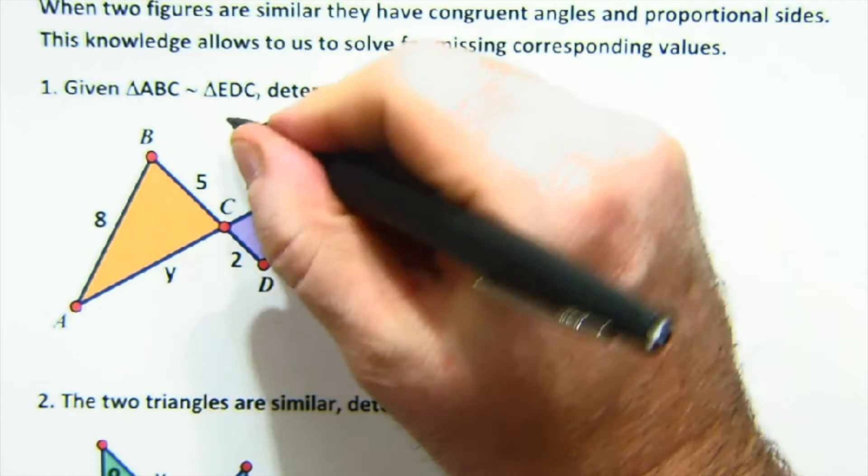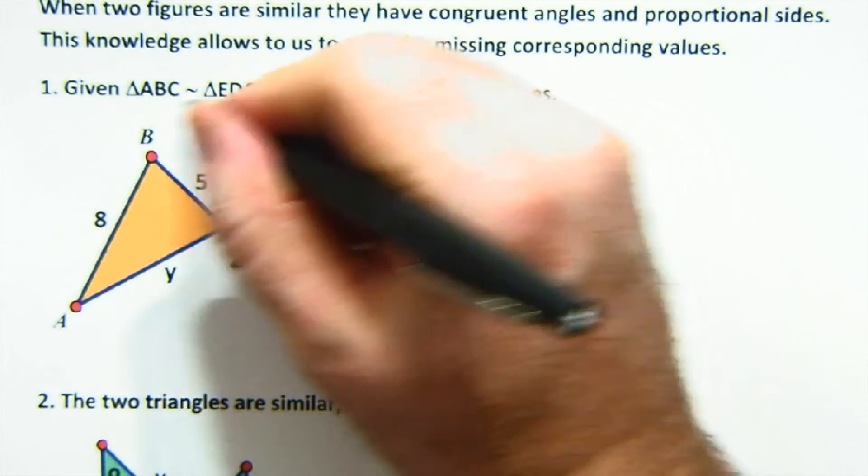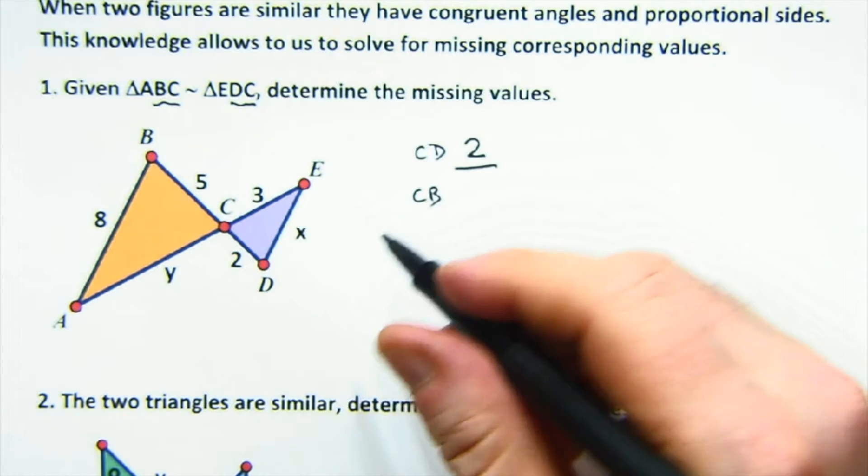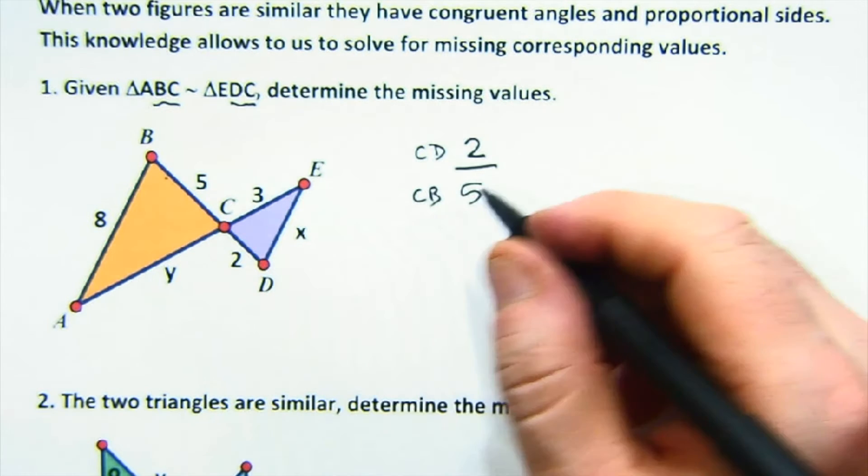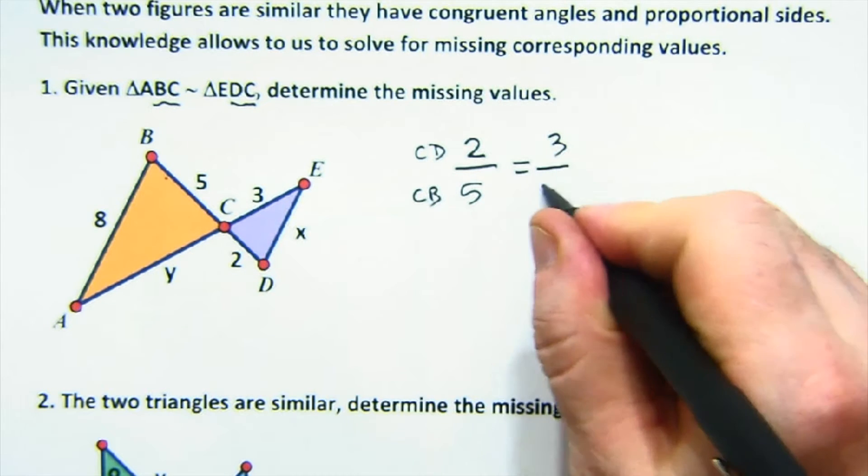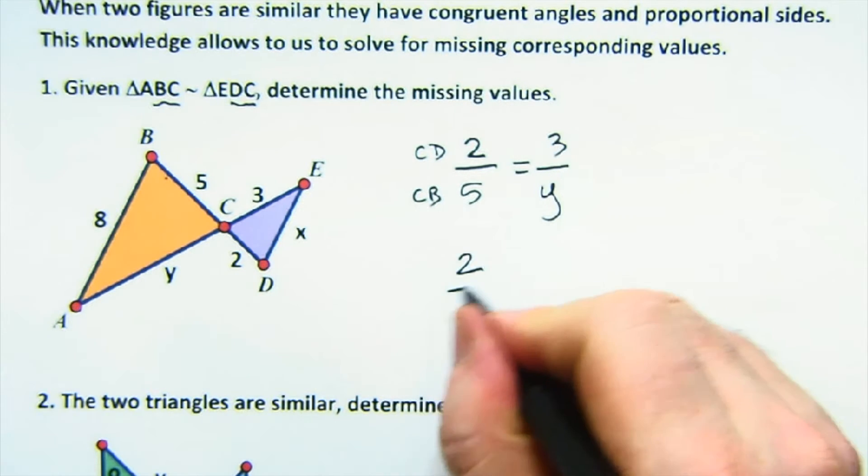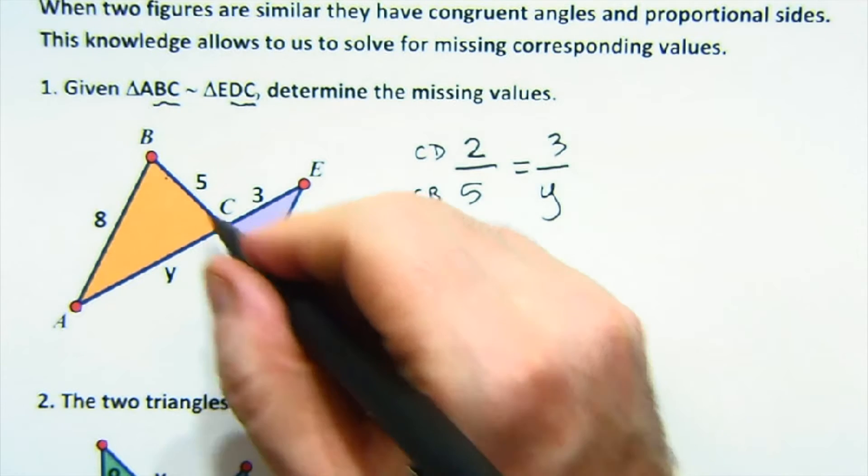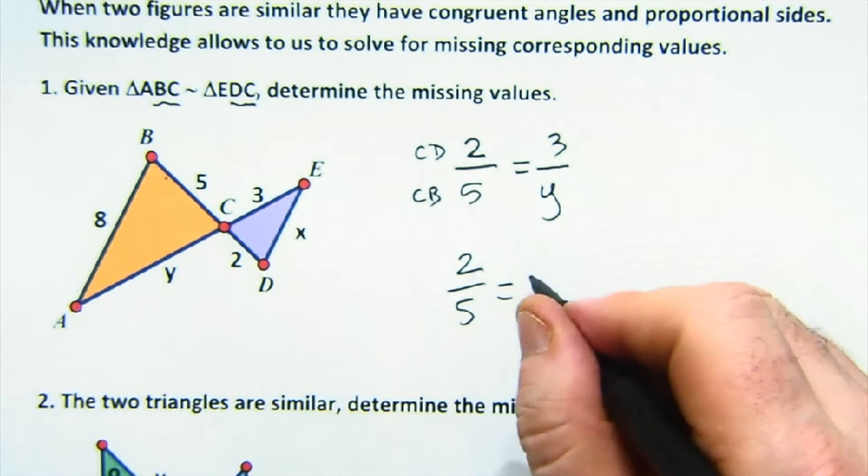You see that? So here's my CD, and here's my BC. So the two goes to the five, and that means my three goes to my y, and it also means that the two goes to the five and the x goes to the eight.